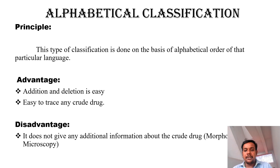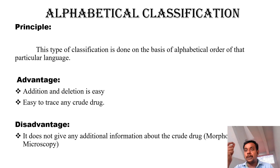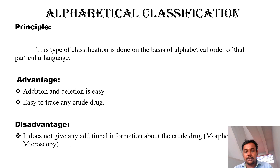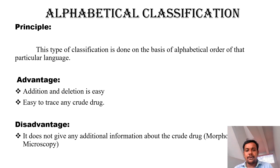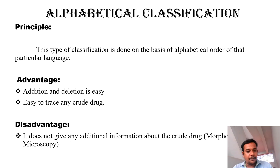The advantage of alphabetical classification is that addition and deletion of crude drugs is very easy. If you want to add any crude drug, by knowing its first letter you can add it easily. If any crude drug name is duplicated, you can delete it very easily. The second advantage is that it is easy to trace any crude drug — if you know the first letter of that crude drug, you can find it very easily.